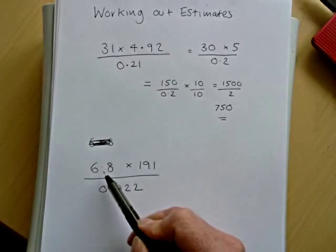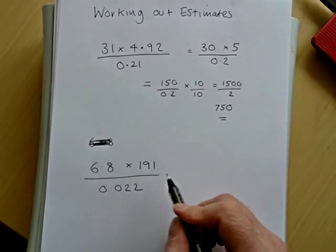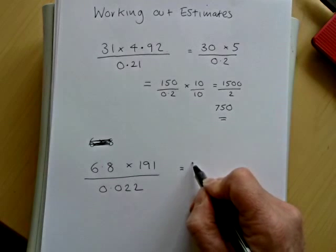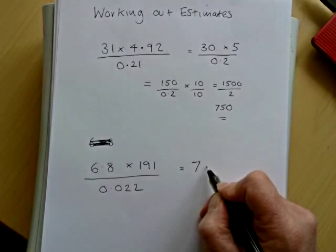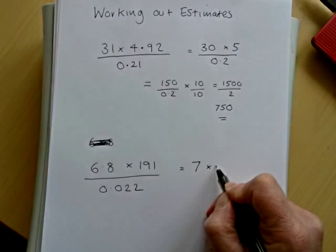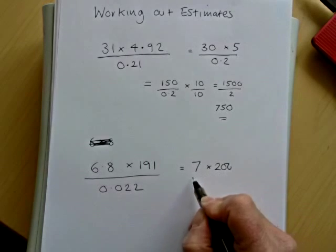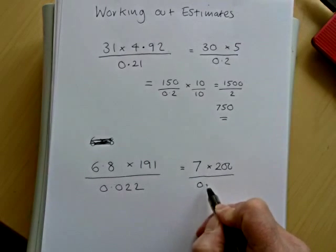So on to the second question, which is fairly similar. So we're going to change 6.8 into 7, and the 191 into 200. And then we're going to have 0.022 on the bottom.